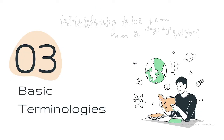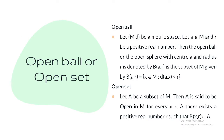Now let us move on to the basic terminologies of real analysis and metric space. The first basic terminology is the open ball in a metric space. To define an open ball, we have a metric space M, and a is a subset of M. I take an element a in M and r, a positive real number. The open ball B(a, r) — where B stands for ball — with center a and radius r is the collection of all elements x in M such that the distance between a and x is less than r. So B(a, r) is the collection of elements in M satisfying this property.